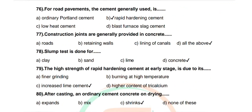Question 76: For road pavements, the cement generally used is — options: ordinary Portland cement, rapid hardening cement, low heat cement, blast furnace slag cement. Correct answer: rapid hardening cement. Question 77: Construction joints are generally provided in concrete — options: roads, retaining walls, lining of canals, all of the above. Correct answer: all of the above.